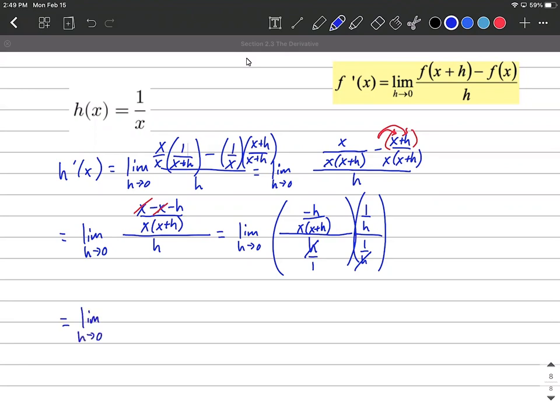Some of you may have learned this as keep, change, flip. It's kind of what's going on behind the scenes here, and that works if you want to visualize it that way. But I'm going to take what's left in the numerator. Negative h over x times x plus h multiplied by 1 over h.